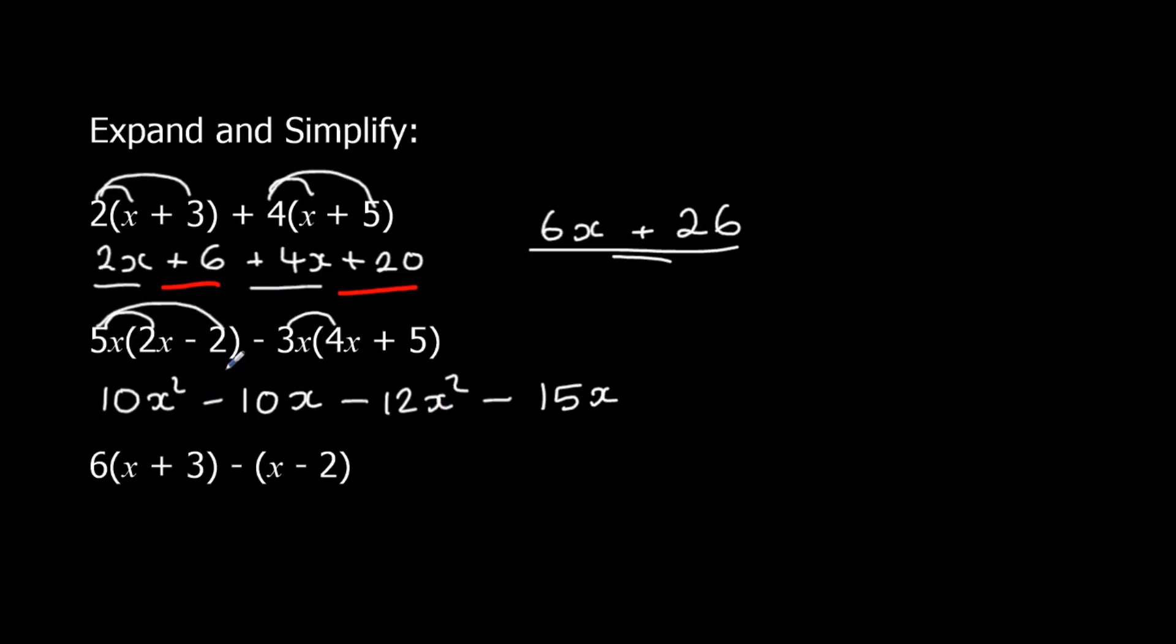So again, we're going to collect what we can. So the terms we can add up. We've got x squared terms. And we've got x terms. So 10x squared take away 12x squared. 10 take away 12. It's going to give me minus 2x squared. And minus 10, minus another 15. So minus 10 minus 15 is minus 25x. That's the answer.